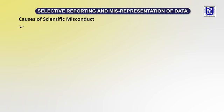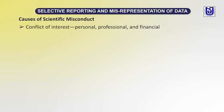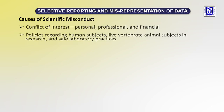The causes of scientific misconduct — conflict of interest is the most important part. This includes personal, professional, and financial conflicts. Other causes involve policy regarding human subjects, live vertebrates or animal subjects in research, and safe laboratory practices.